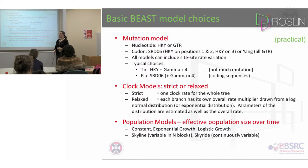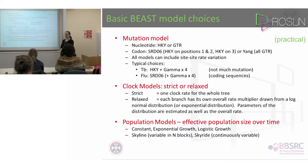For TB, typical choices would be the HKY model with site-to-site variation in four categories. For flu, because that's a very strongly coding sequence, you would use the SRD-06 model and allow site-to-site rate variation as well, again with four categories of possible rate variations. So that's the mutation model.